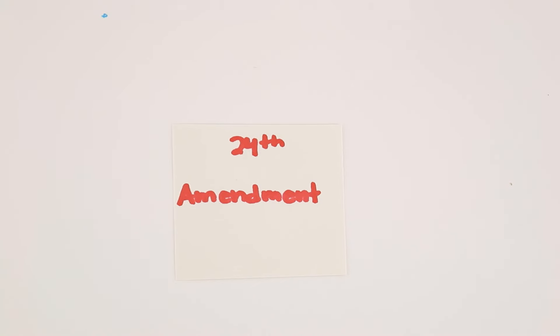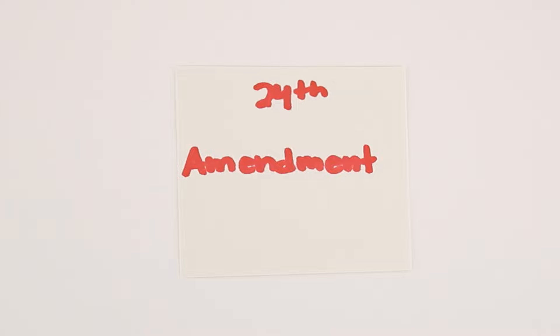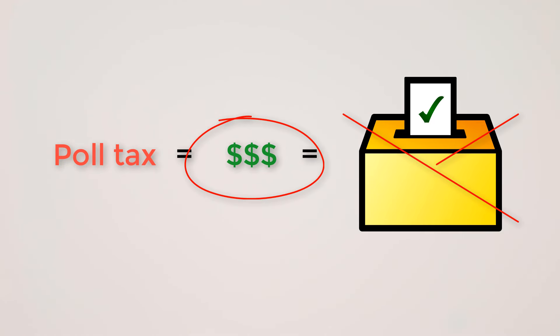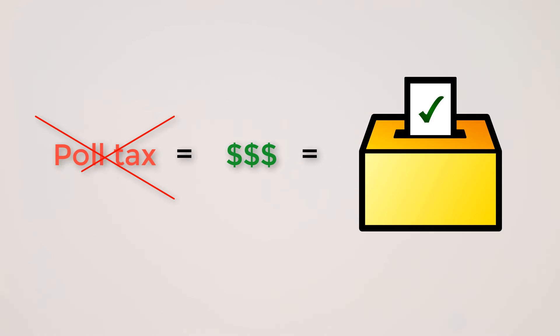The 24th Amendment outlawed poll taxes. A poll tax was a fee you had to pay in order to vote. If a person didn't have the money to pay, then they couldn't vote. The 24th Amendment made poll taxes illegal.